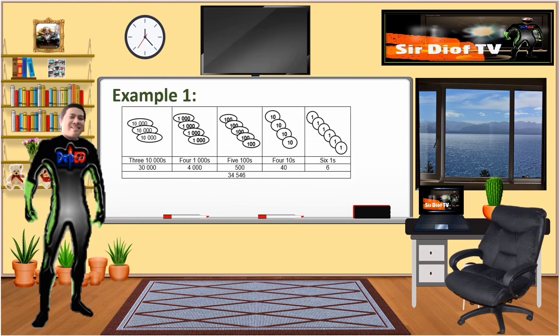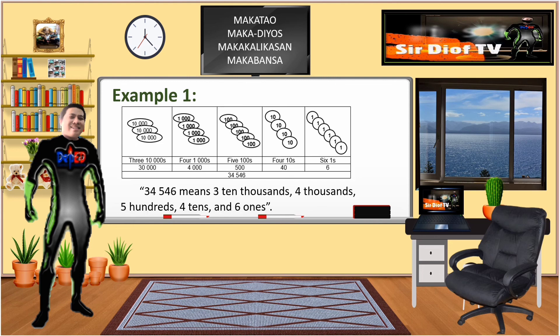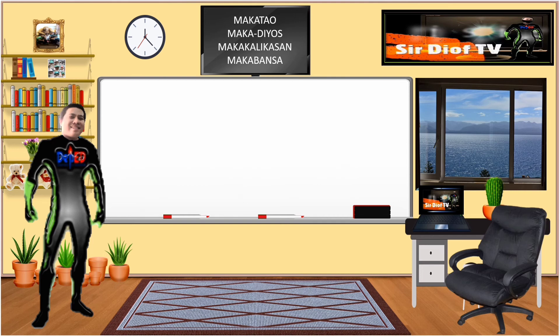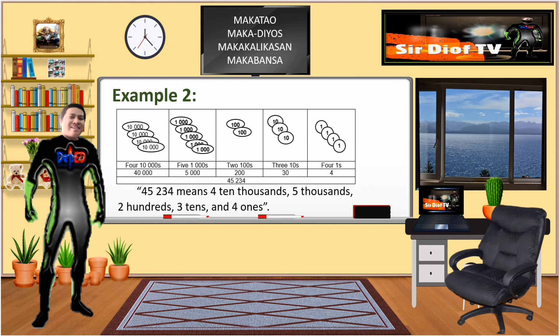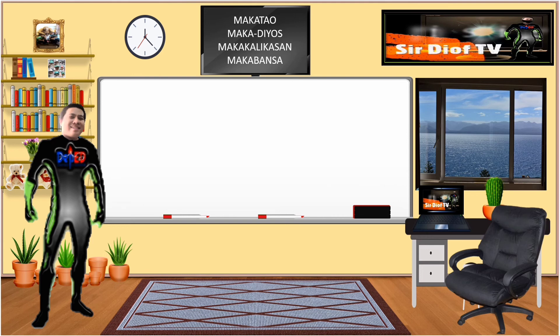Example 1: 34,546 means three ten-thousands, four thousands, five hundreds, four tens, and six ones. Example 2: 45,234 means four ten-thousands, five thousands, two hundreds, three tens, and four ones.